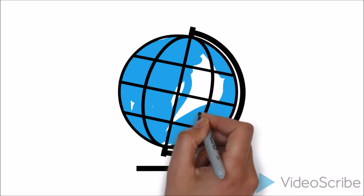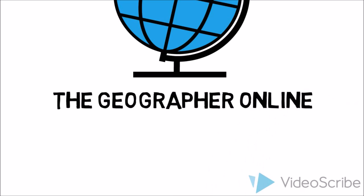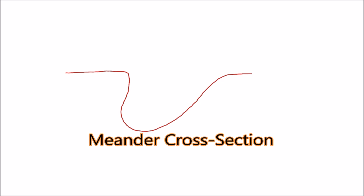Hello everyone. In this video we're going to be looking at two river features. These features form in the mid to lower part of the river, and we're going to be looking at a meander and an oxbow lake.